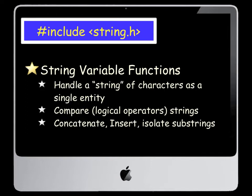We'll use a lot of string variables not only in C++ but in Java. For many of you who take the intermediate course, you'll see some great similarities. string.h allows us to handle a string of characters as a single entity. We can compare strings using logical operators, concatenate — which means add two strings together — insert, isolate substrings, and so on. We'll use this library to a great extent in our dual credit course because most database information is contained as strings, not simple numerical data.